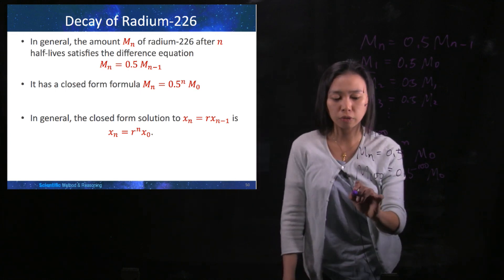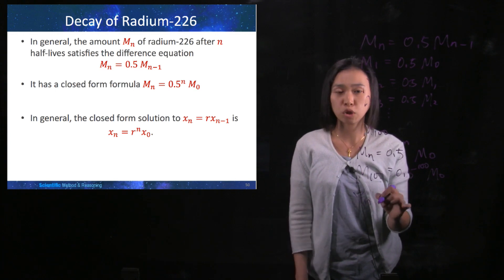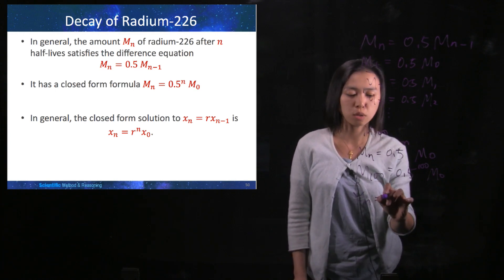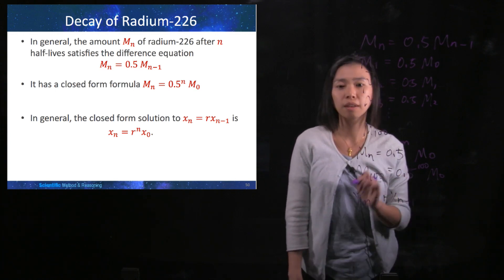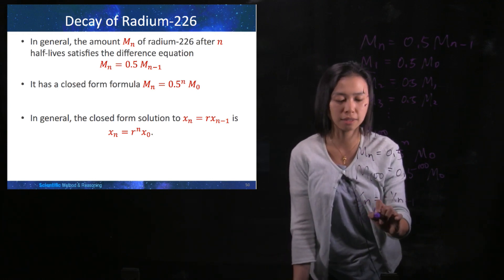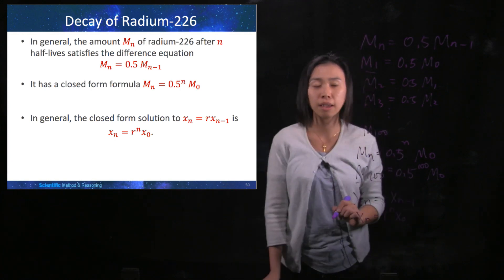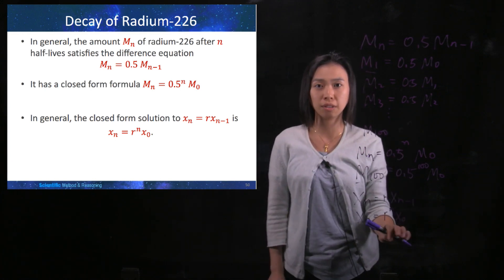So in general, if you have a first-order linear homogeneous difference equation like this one, you can simply write down the solution: xn = r^n · x0. Make sure you know the initial condition as well.